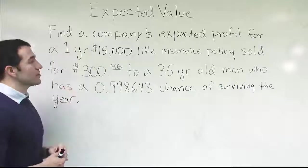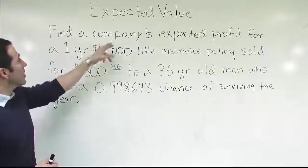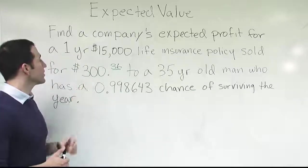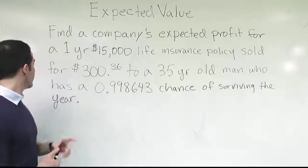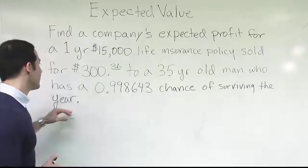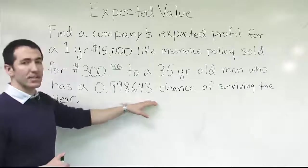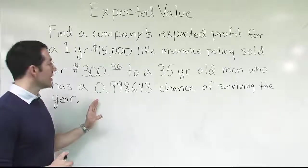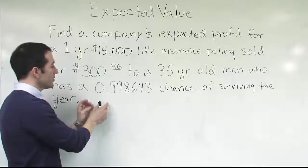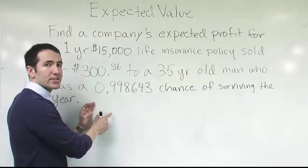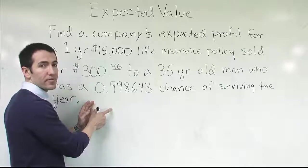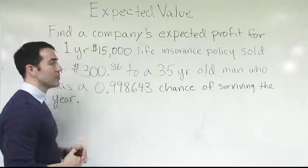Let's read the problem and then see what they're trying to get us to find. It says: find a company's expected profit for a one-year $15,000 life insurance policy sold for $300.36 to a 35-year-old man who has a 0.998643 chance of surviving the year. This number is actually accurate — I pulled it from an actuary table. Actuaries come up with these probabilities, and the table has the probability of making it from one age category to the next. So the probability a 35-year-old man in the United States will get from 35 to 36 is 99.8643%.